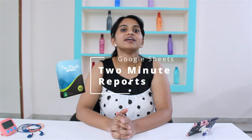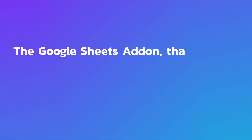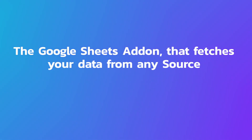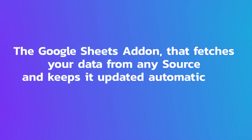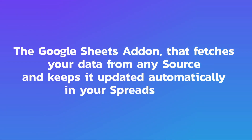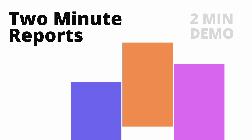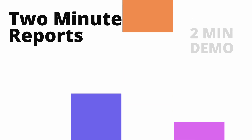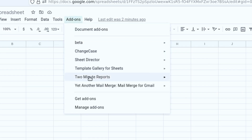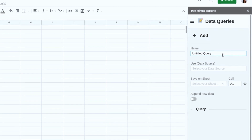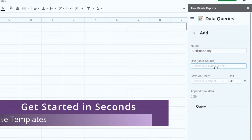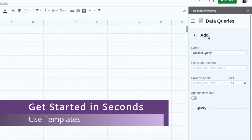Then you need Two Minute Reports — the Google Sheets add-on that fetches your data from any source and keeps it updated automatically in your spreadsheets. Once you're logged into Two Minute Reports from inside Google Sheets, the first thing you will want to do is create queries and build a report. You can either create one from scratch or start with one of the templates.